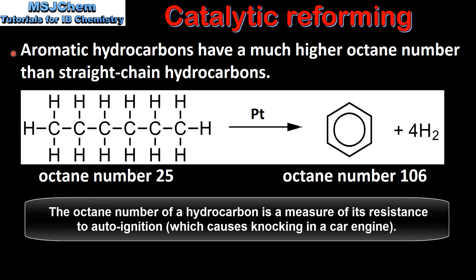Aromatic hydrocarbons have a much higher octane number than straight chain hydrocarbons. In the previous example we looked at hexane being converted into benzene. The octane number for hexane is 25 and the octane number of benzene is 106, which shows that aromatic hydrocarbons have a much higher octane number than straight chain hydrocarbons.